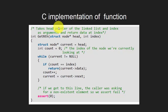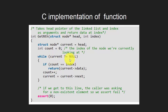Let us now understand the implementation of the function in C programming language. The return type of the function getNth is integer. This function takes the head node of the list as an argument and an index as an argument. We have first initialized a pointer current to point to the head node and a variable count to 0. We will then traverse the linked list until the current pointer becomes null, that is until we reach the end of the linked list. We check if count is equal to index; if so, we return the data of the current node. Otherwise, we increment count and change the pointer to point to the next node.